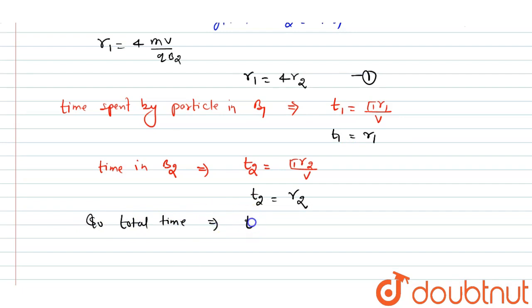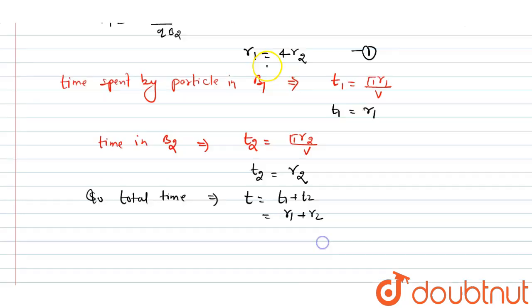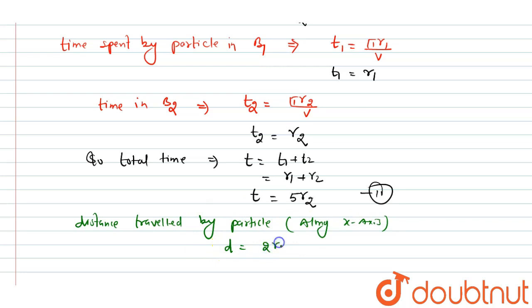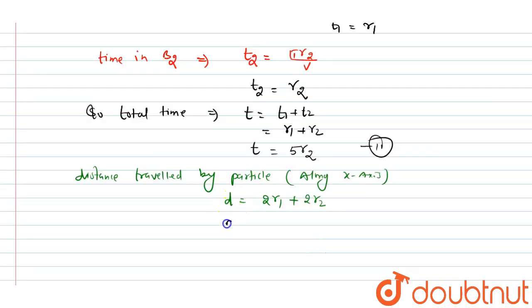Next, we find the distance travelled by the particle along the x-axis: d = 2r1 + 2r2. Substituting r1 = 4r2 from relation 1: d = 2(4r2) + 2r2 = 8r2 + 2r2 = 10r2. This is relation 3.